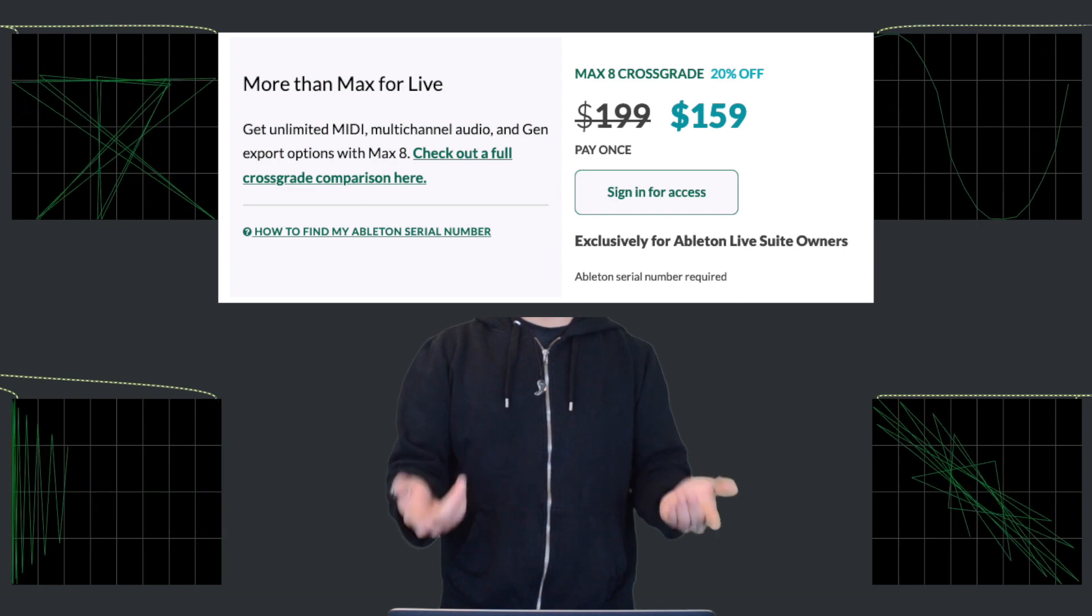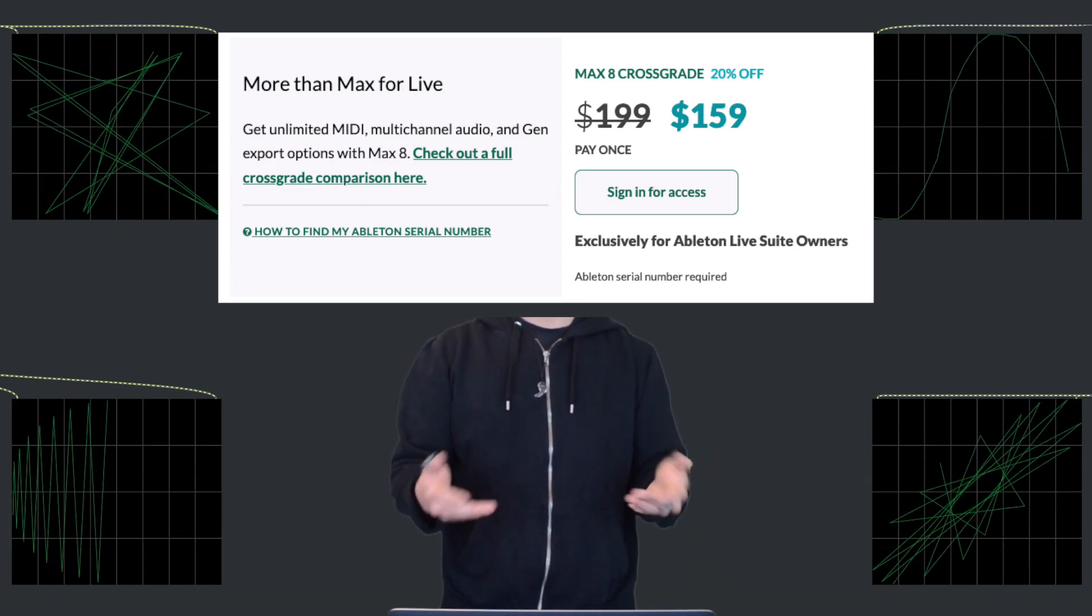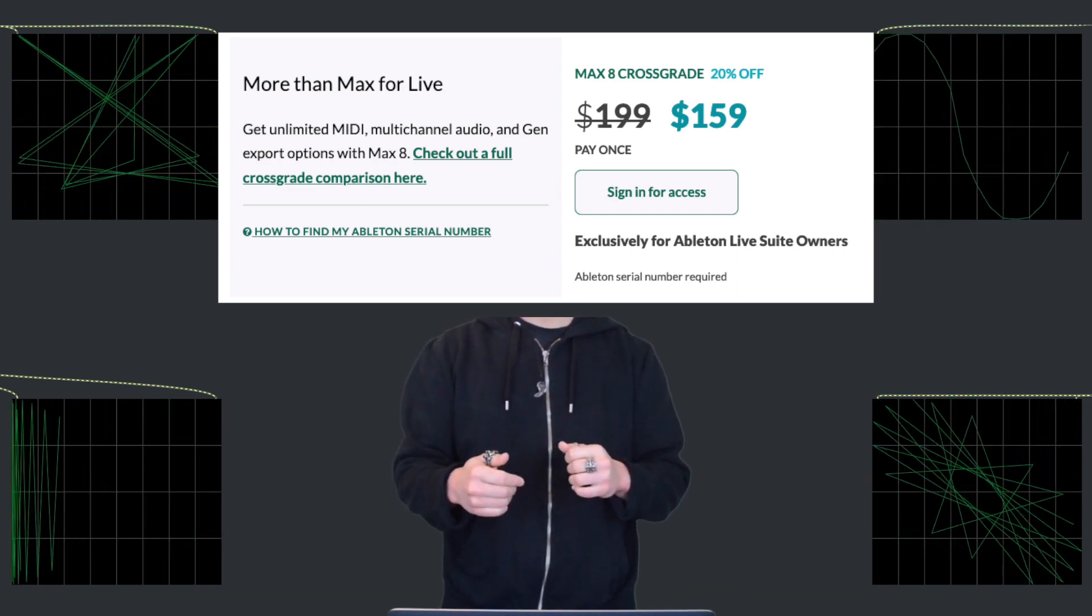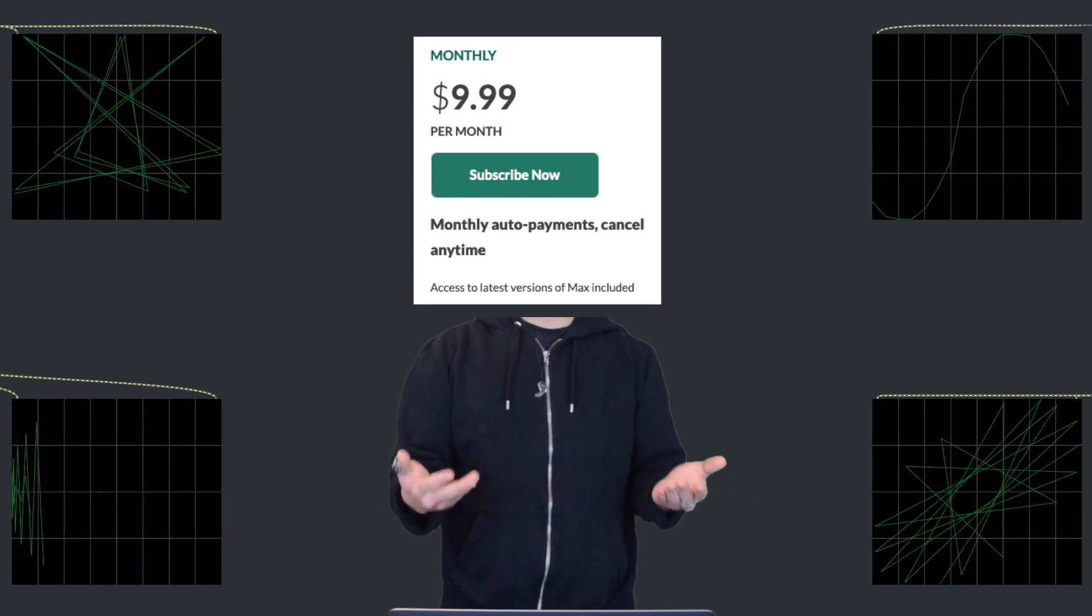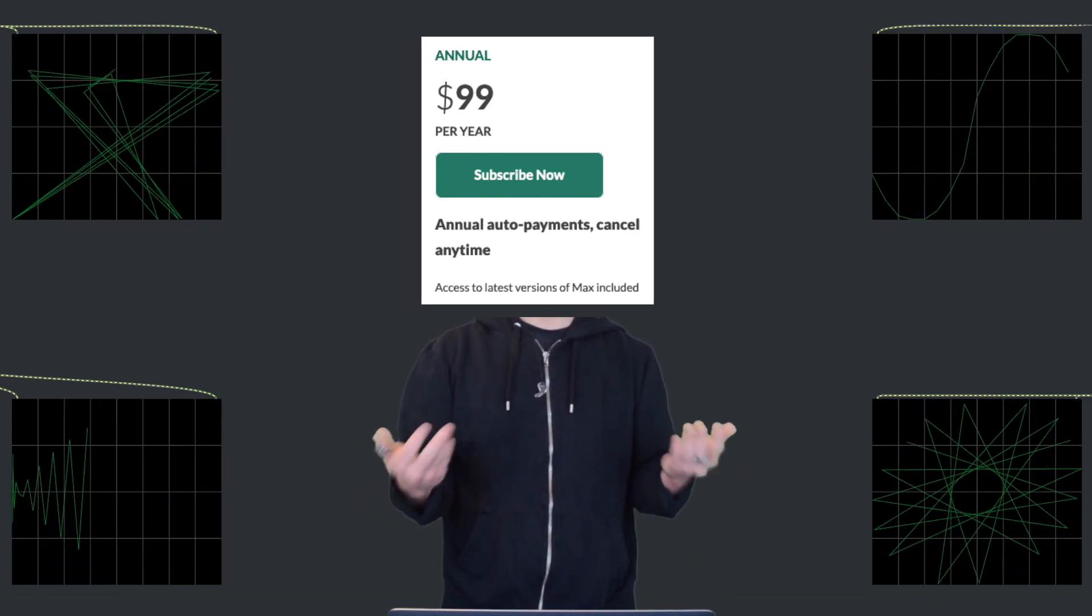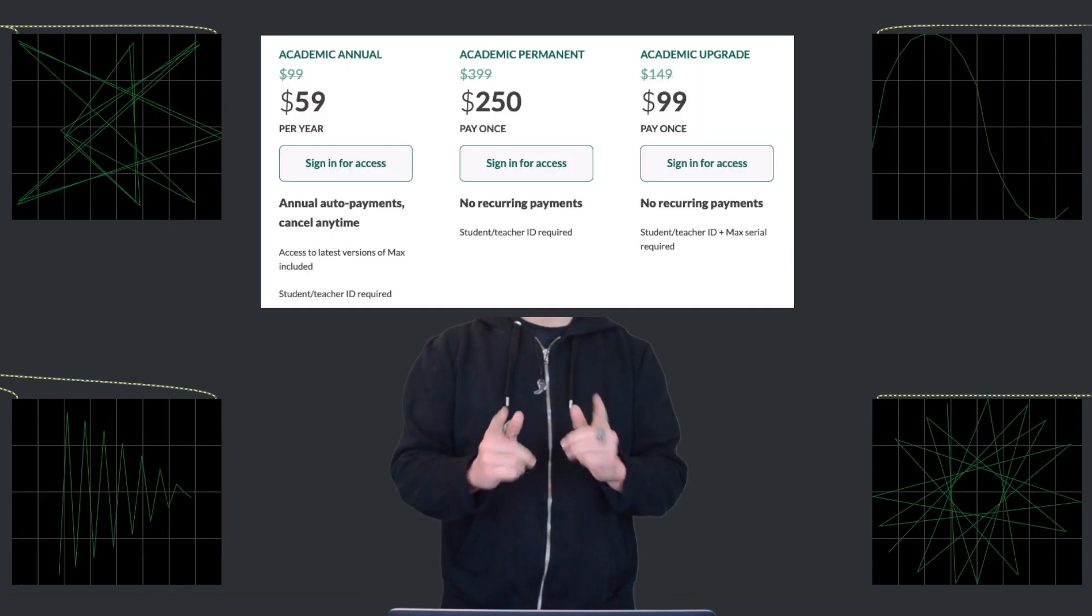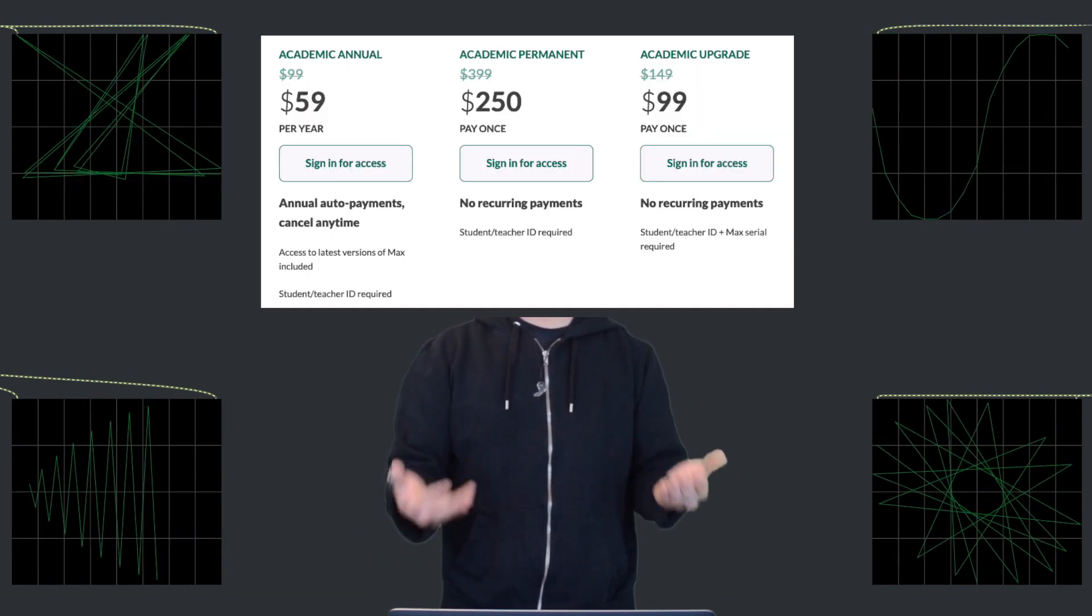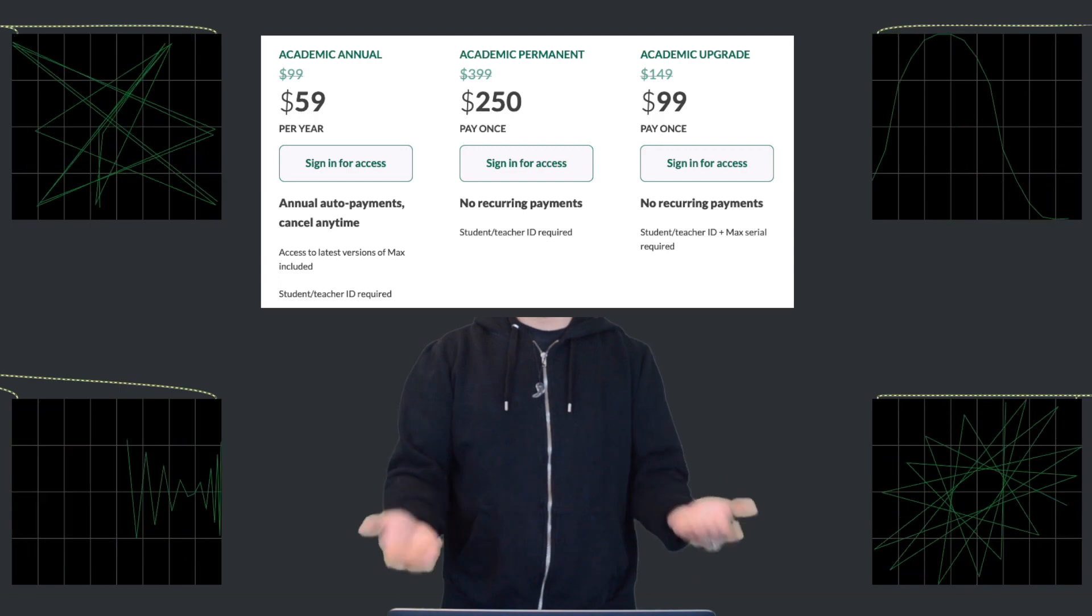There's also Max 8 crossgrade for Ableton Live Suite, which costs $199. There are options to pay $9.99 monthly or with a $99 annual subscription. If you're a student, you can get an academic discount price, which is $250.